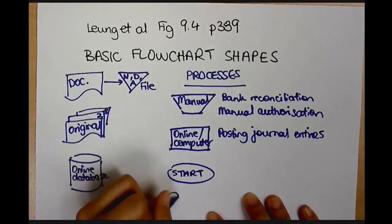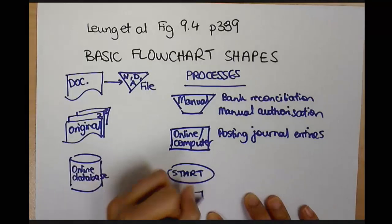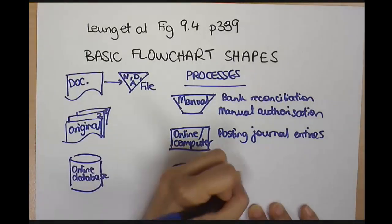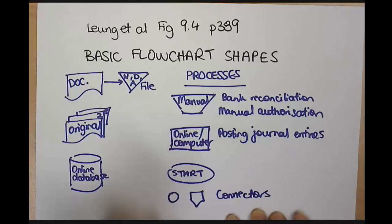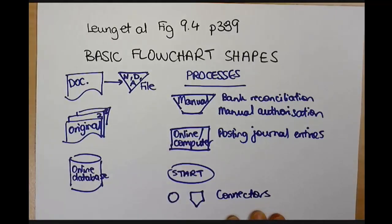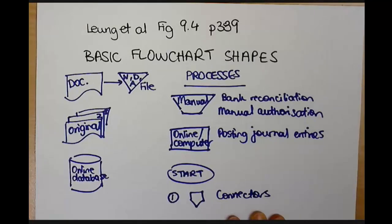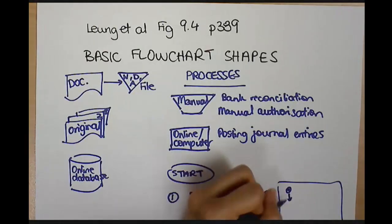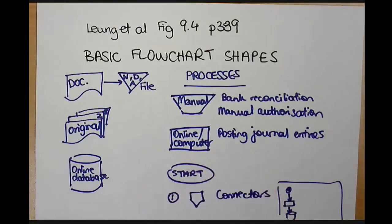And then the last ones I want to talk about are connectors. Alright. So these are connectors. And so that's when our flowchart goes over multiple pages. So I might say, look, something happens, a process, and it goes here to point one. Alright. And then over here on a different page, where number one might flow through, I'll start with number one going into my various shapes.